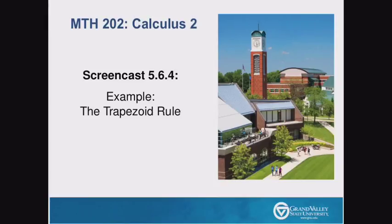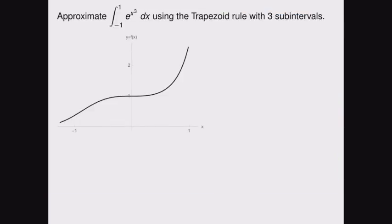Hello and welcome to the screencast in which we're going to work an example of the trapezoid rule. Here's our problem. We want to integrate e to the x cubed between negative 1 and 1 using the trapezoid rule with three subintervals.